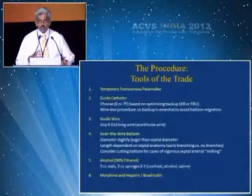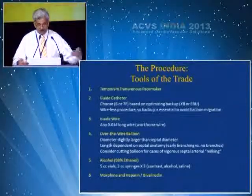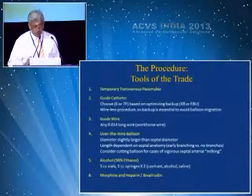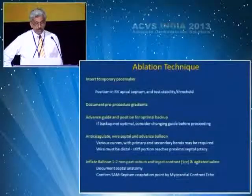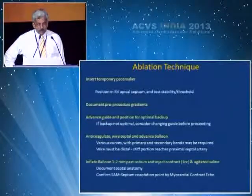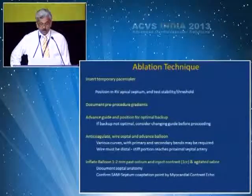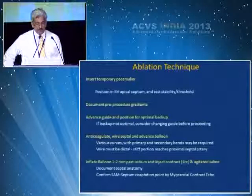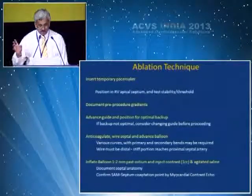The alcohol should be pure 98% ethanol, in 5cc vials, with 3cc syringes — one with contrast, one with alcohol, and one with saline. You should have morphine and heparin on the table. Insert the temporary venous catheter in the right ventricle apex, test its stability. Document pre-procedure gradients at rest and on provocation post-PVC. Advance your guiding catheter for optimal backup; if backup is not optimal, consider changing your guide. Anticoagulate the patient, wire the septal, and advance the balloon.